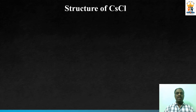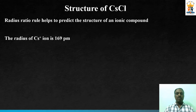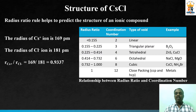The radius ratio rule helps predict the structure of an ionic compound. The radius ratio is the radius of the positive ion divided by the radius of the negative ion. Here, the radius of the Cs⁺ ion is 169 picometers and the radius of the Cl⁻ ion is 181 picometers, giving a radius ratio of 0.9337. Referring to the radius ratio table, which correlates the radius ratio with coordination number and void type, CsCl belongs to a cubic lattice with a coordination number of eight.